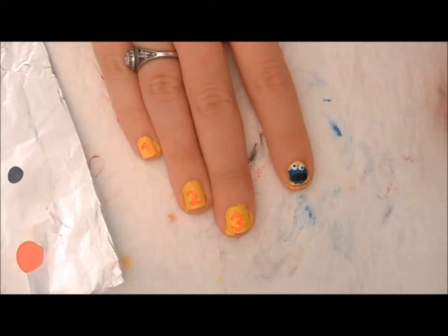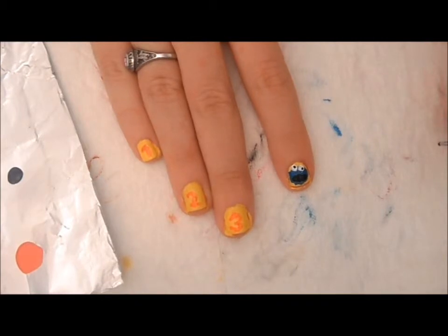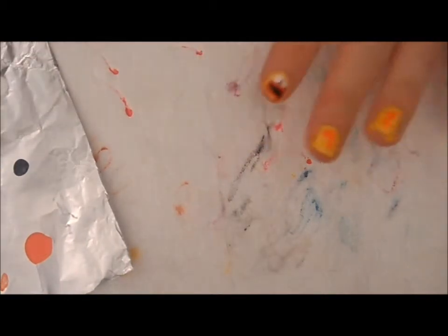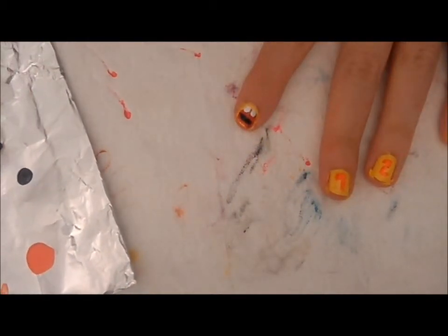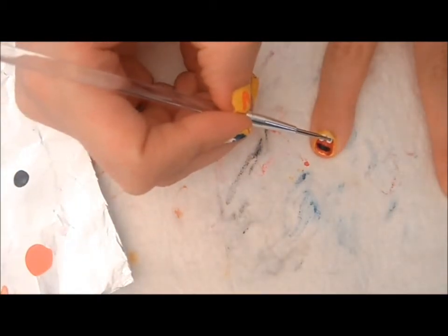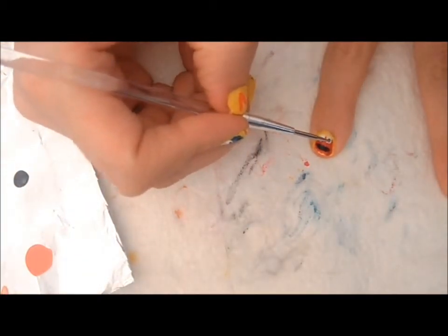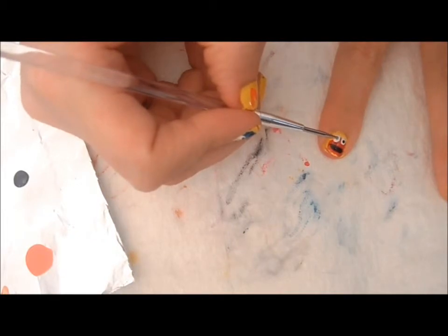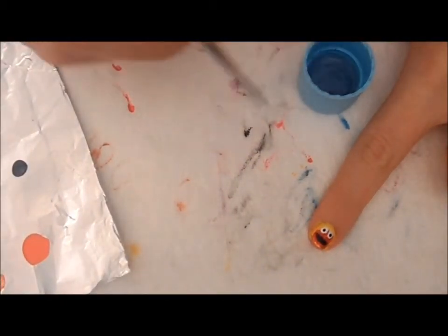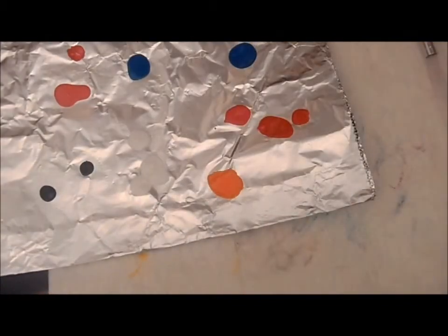You're going to let Cookie Monster dry completely before you topcoat him, because if you topcoat him before he's completely dry, you're just going to smear him and he's not going to look like Cookie Monster. While you've got your black and your dotting tool, you're going to do Elmo's eyes. Elmo looks straight ahead because that's just what he does. If you look closely, he's not quite Elmo yet. Elmo needs his little nose.